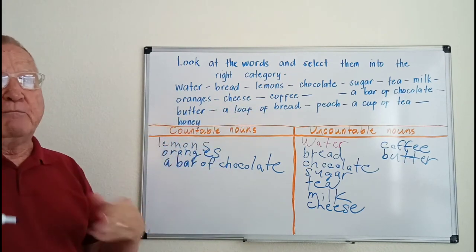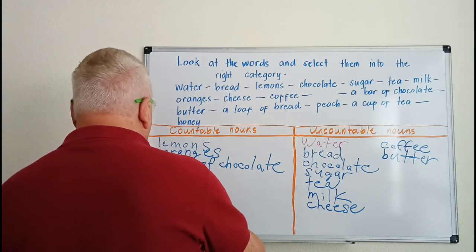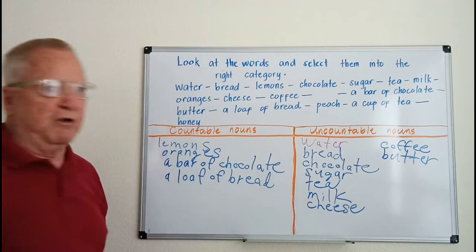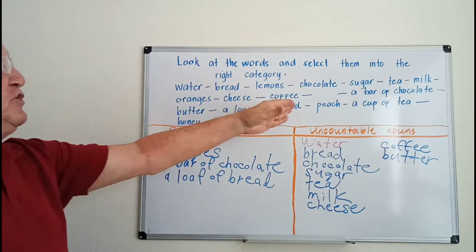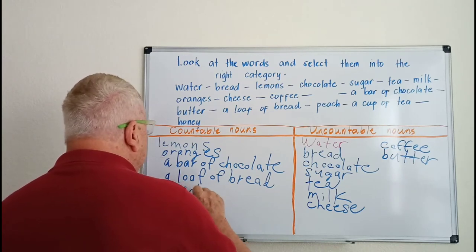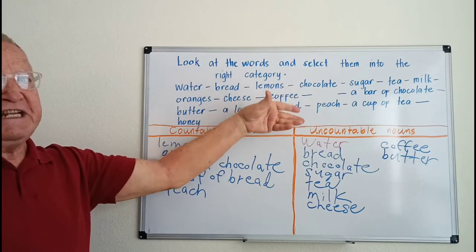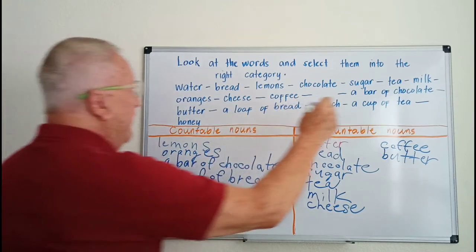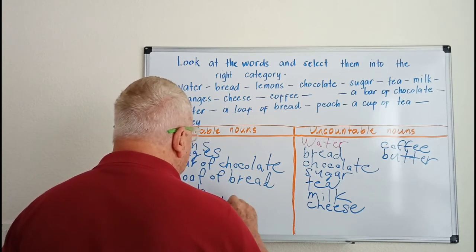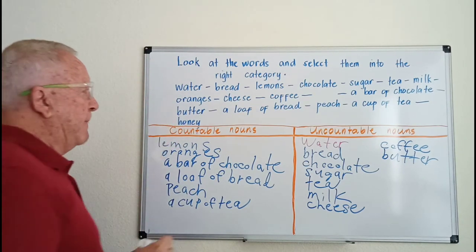A loaf of bread is different from just saying 'bread' — using 'of' makes it countable. Peach, as a fruit, we can count, so peach is countable. A cup of tea — again using 'of' — is countable. And honey is uncountable.